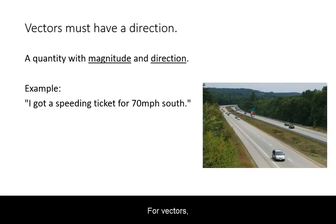For vectors, you must specify their magnitude and direction. When you want to describe velocity, then 70 miles per hour south is sensible. However, when you are expressing speed only, which is a scalar quantity, then describing it as 70 miles per hour south is nonsensical.